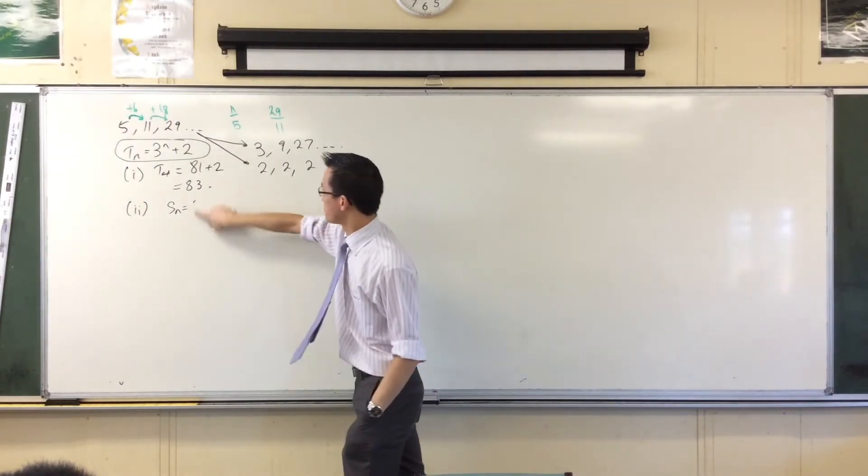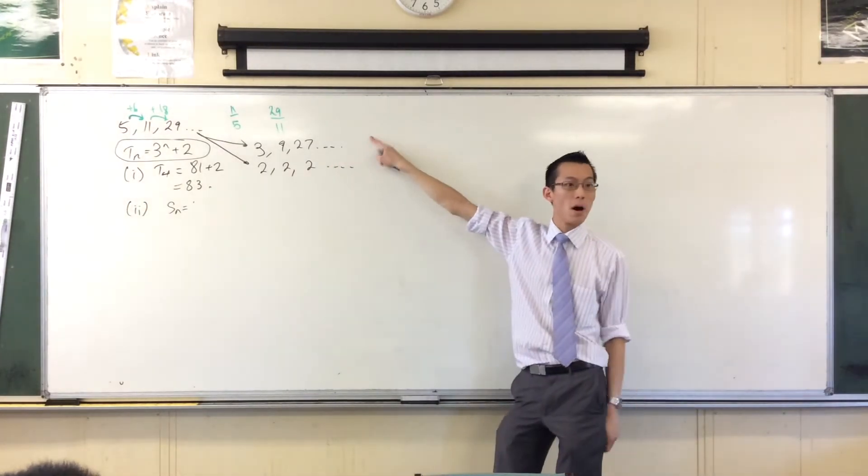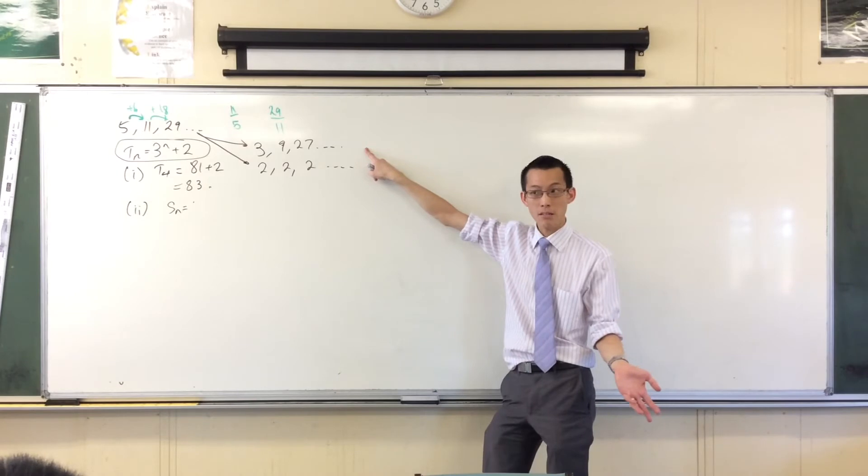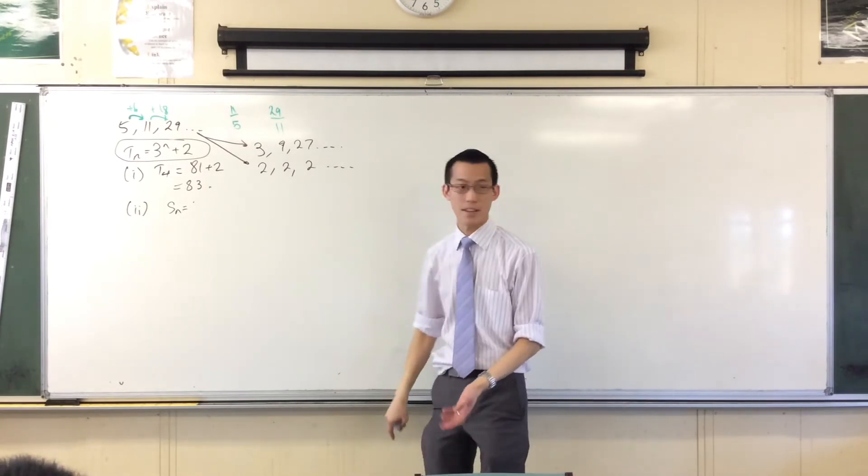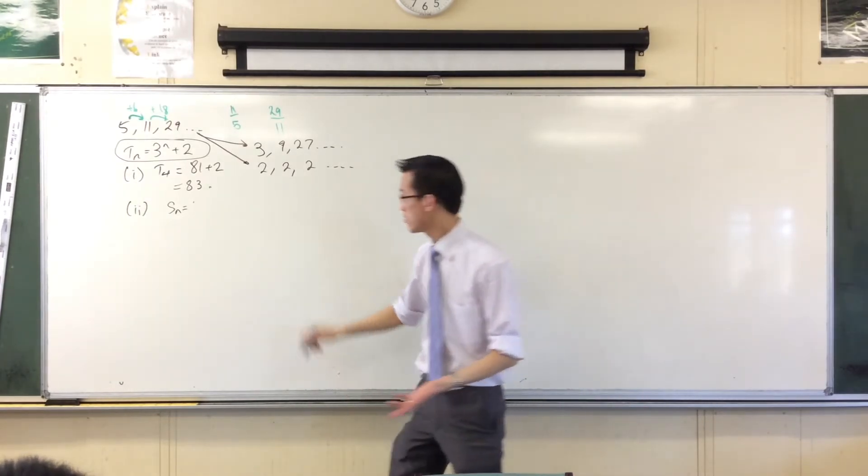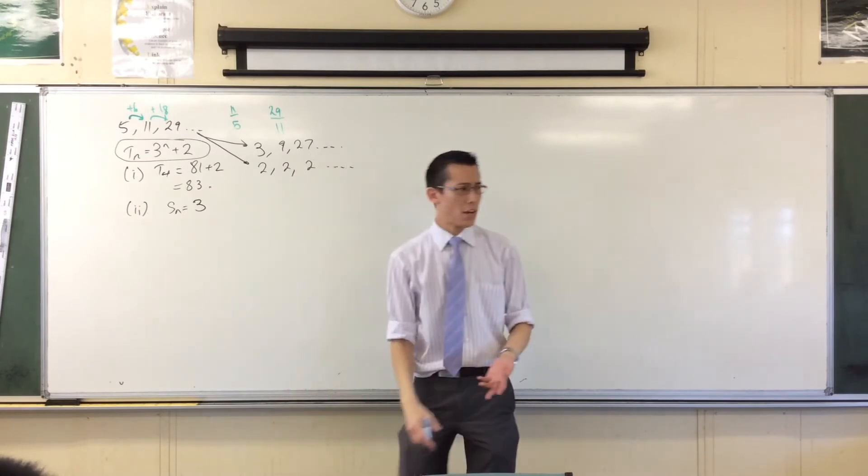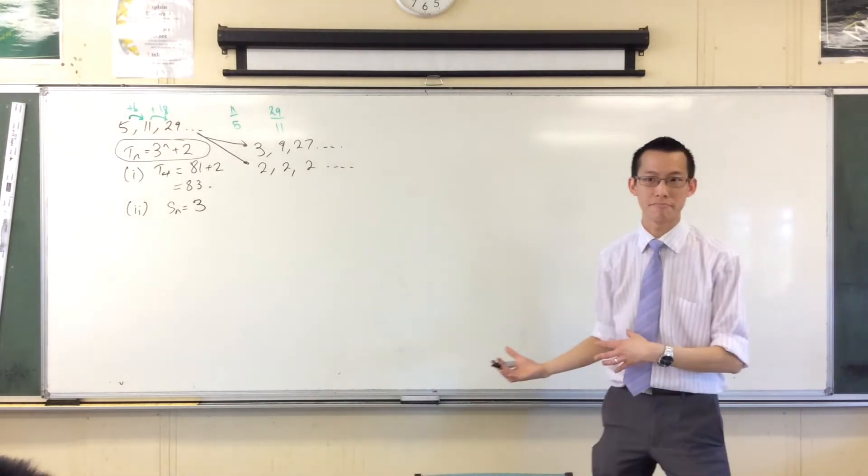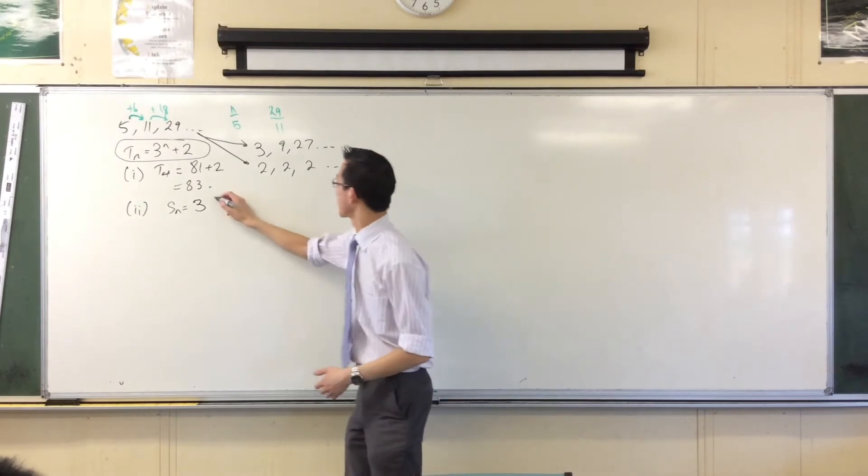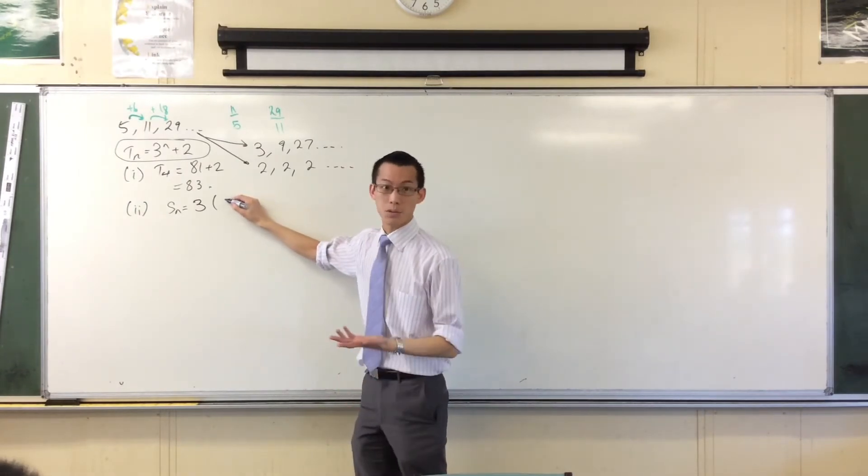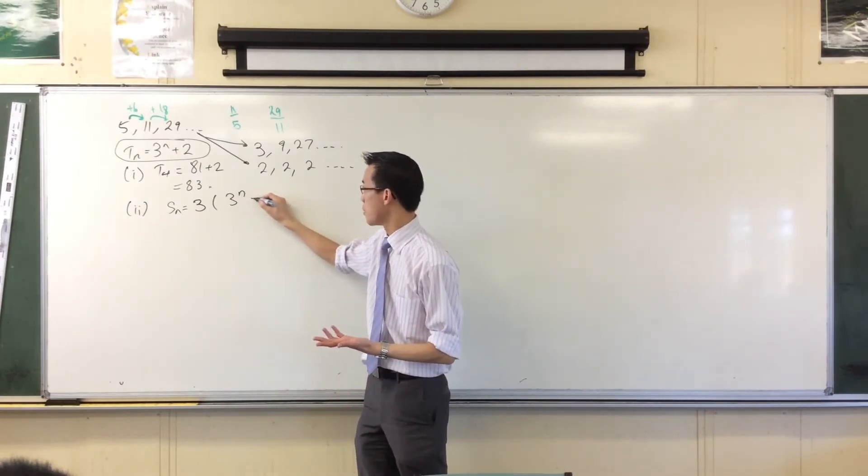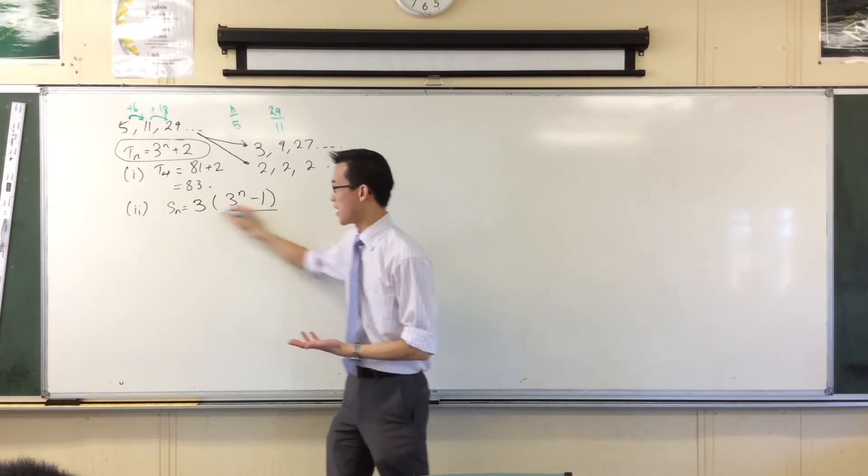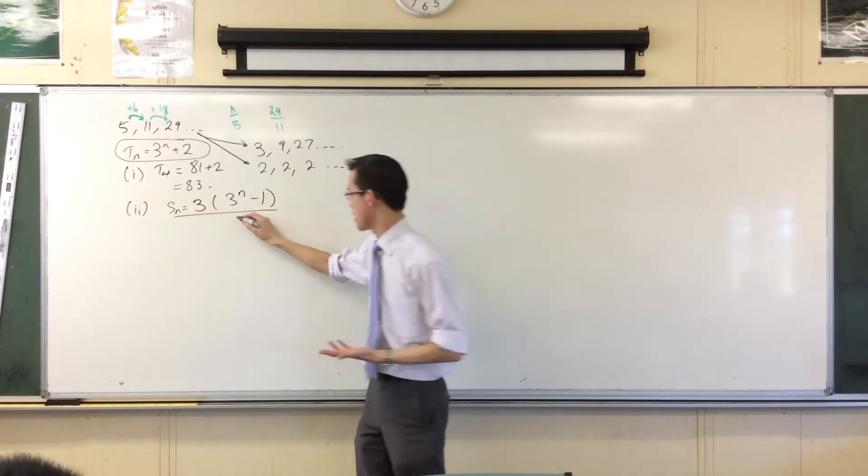Watch. If I were to get the sum to the nth term of this, this is just a GP. So all I need is the first term, which is 3. Should I choose r to the n minus 1, or 1 minus r to the n? r to the n minus 1. r is also 3 to the n minus 1, divided by what? 3 take away 1.